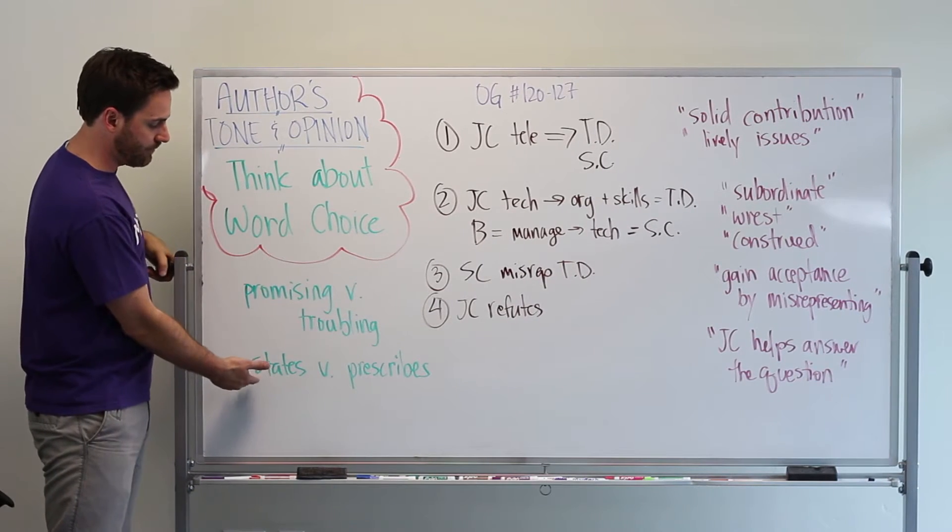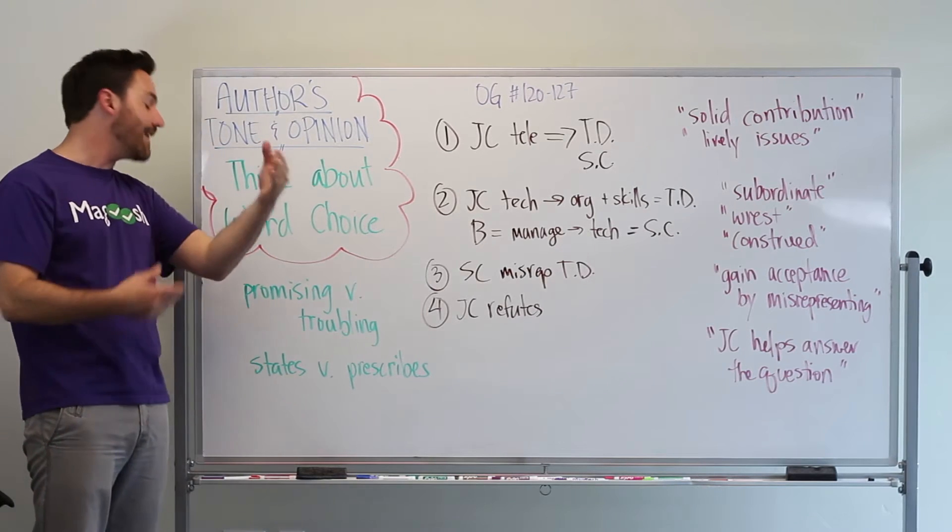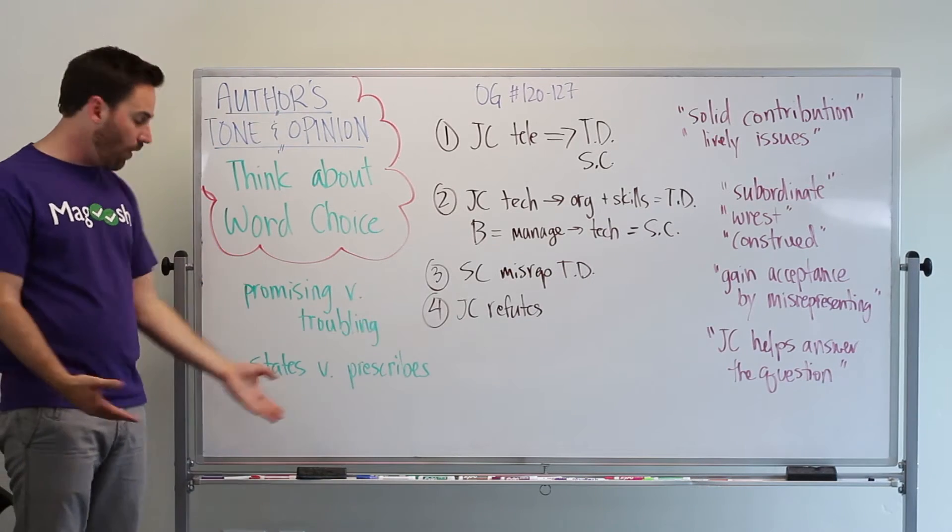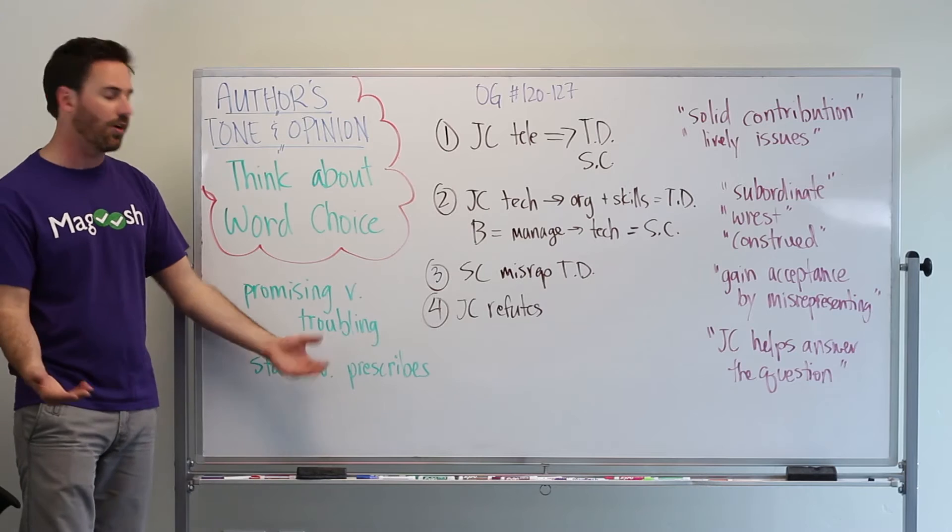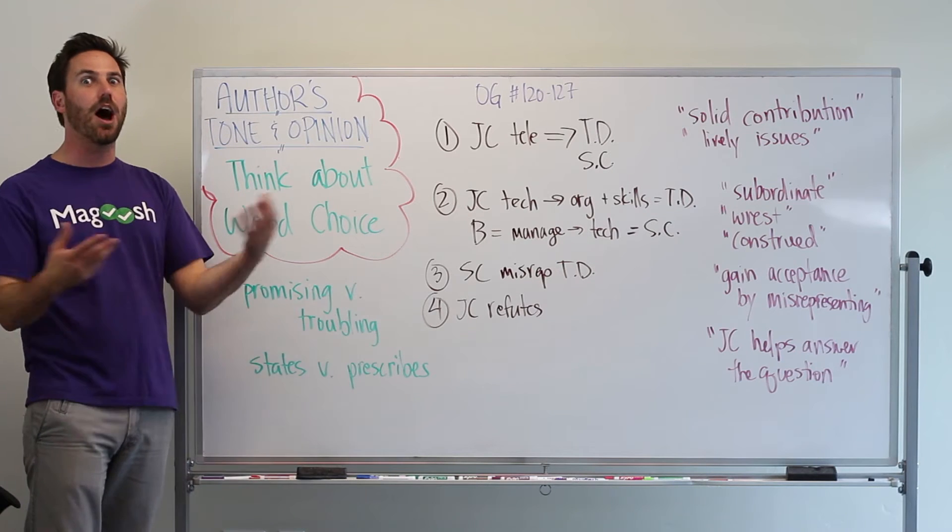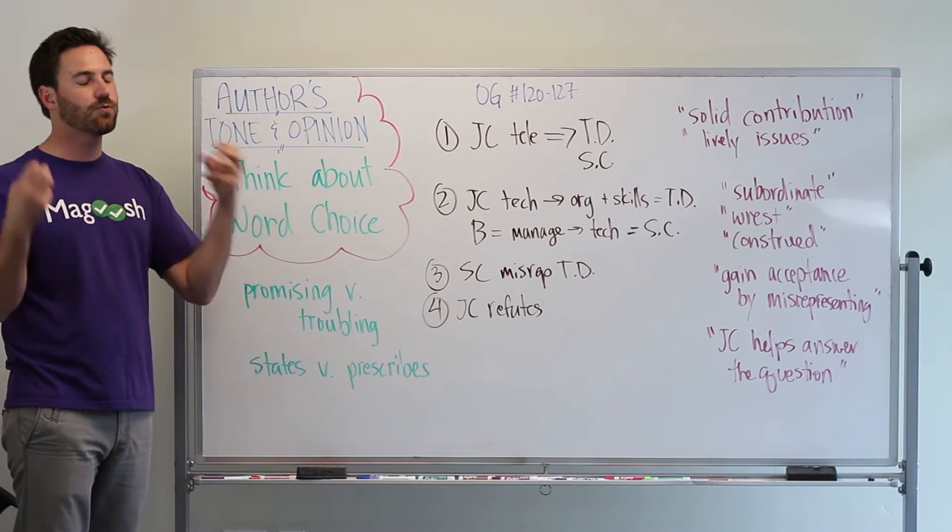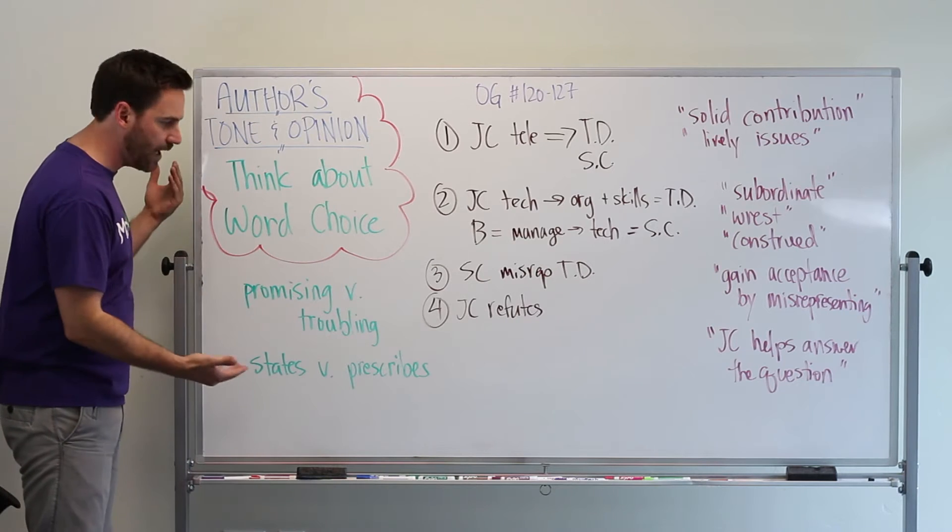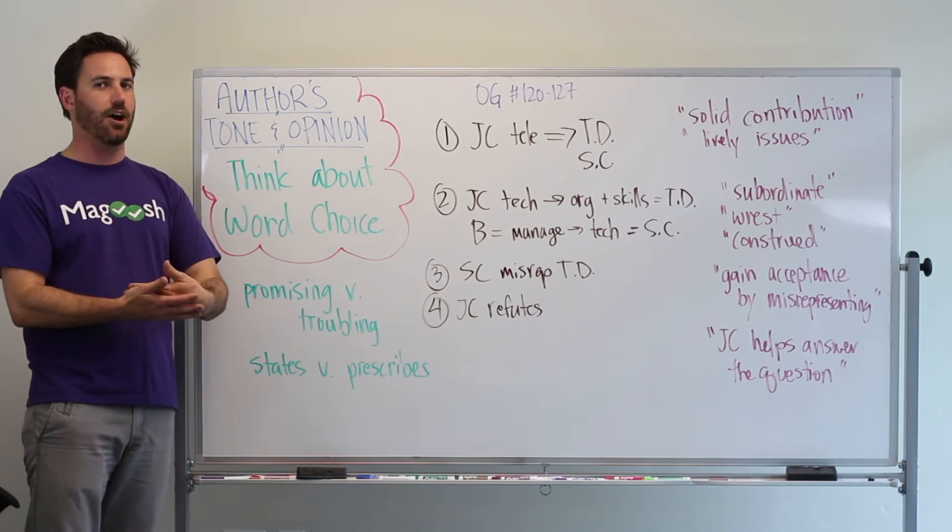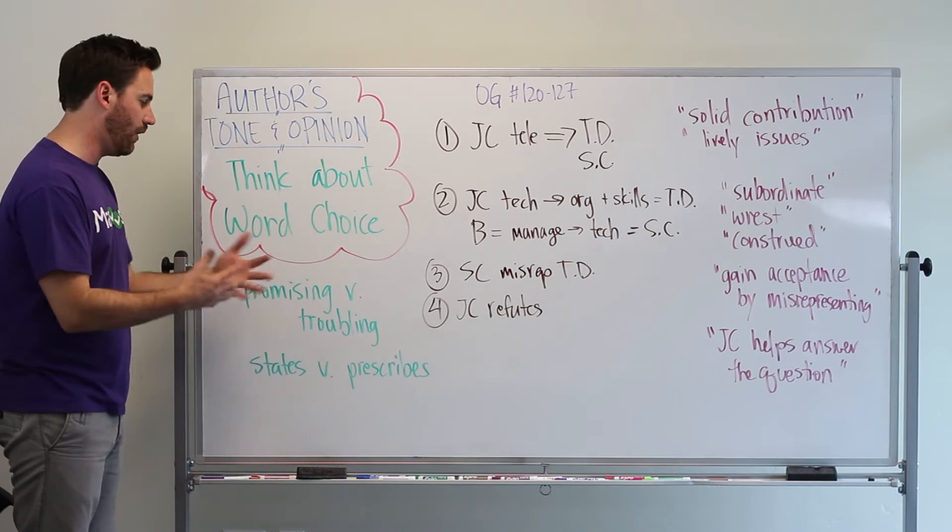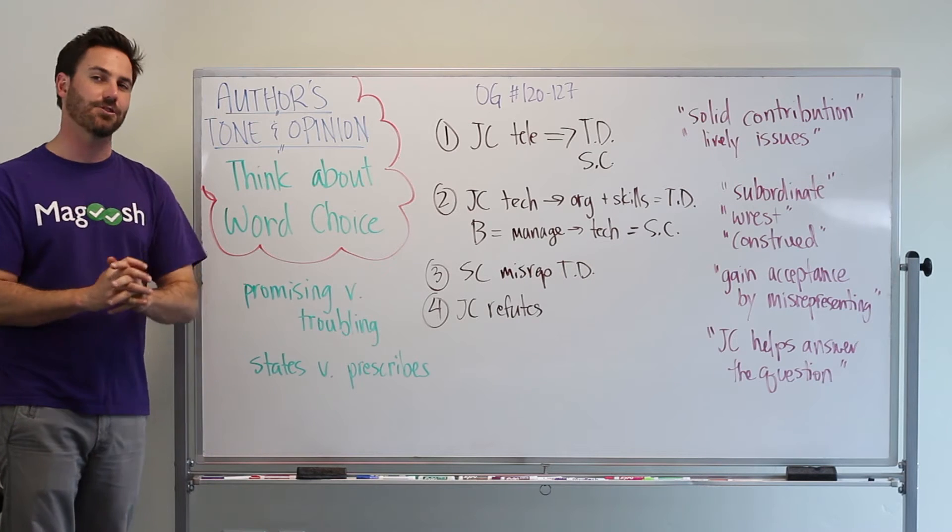Or, for example, if an author uses states instead of prescribes. One, states is sort of neutral, but prescribes has some connotations to it. And so, that's really what you need to think about is the connotation of the words that the author is choosing while you're reading the passages.